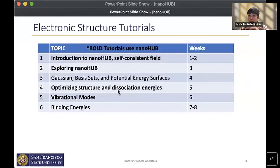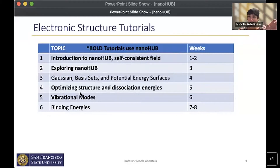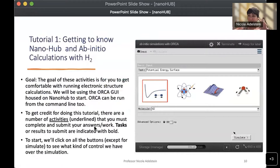The tutorials are the center part of the course, and the ones in bold are done on NanoHub — just two are not done on NanoHub. We have an introduction to NanoHub, understanding self-consistent fields, exploring the tool, optimizing structures and dissociation energies, and calculating vibrational modes. The two remaining tutorials use Gaussian. Now let's walk through Tutorial 1: getting familiar with NanoHub and doing ab initio calculations with hydrogen gas.